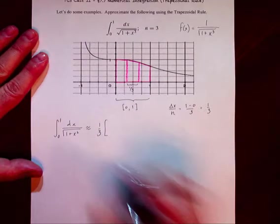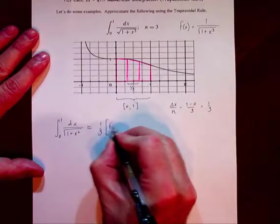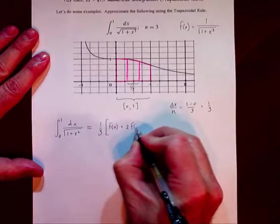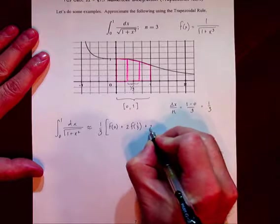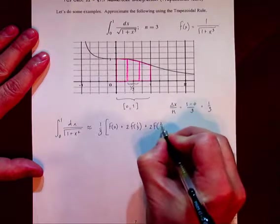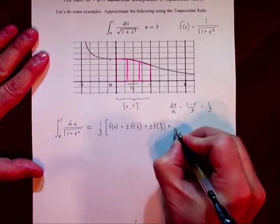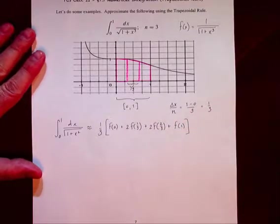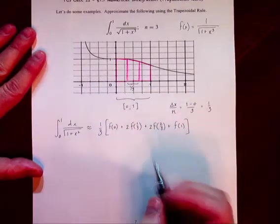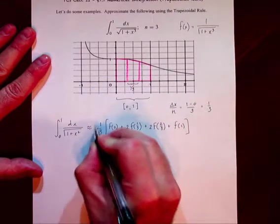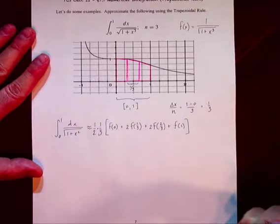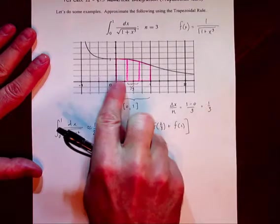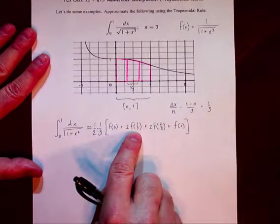And then we evaluate: f at zero, plus two times f at one-third, plus two times f at two-thirds, plus f of one. That's the trapezoidal rule formula. Of course, I almost forgot the all-important one-half out here, because the first trapezoid uses f(0) and f(1/3).